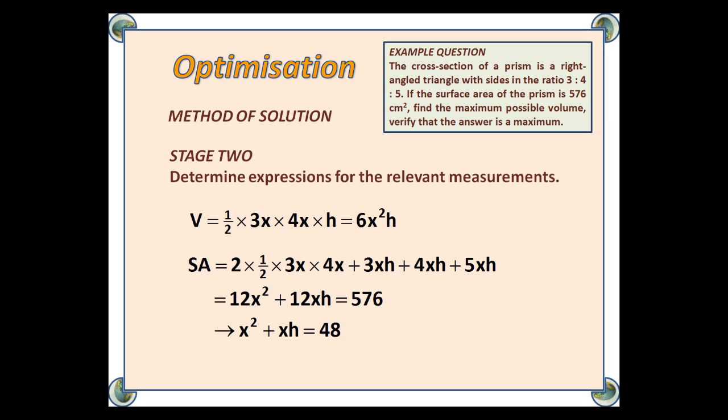Stage 2: Determine expressions for the relevant measurements. So, the volume. It's a right-angled triangular prism, so we've got to times the area of the triangle by the length. So, that'll be half times 3x times 4x for the triangle, times by h, giving us 6x²h.